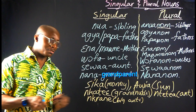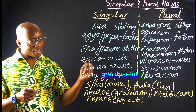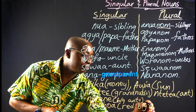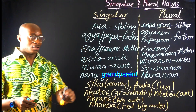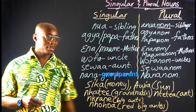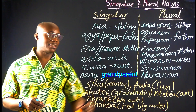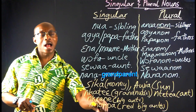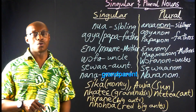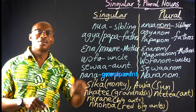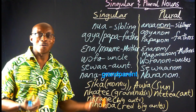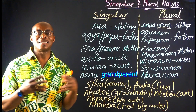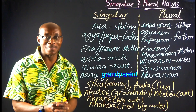Apart from this, we also have Nkohua — the big red ant. One, we say Nkohua; more than one, we say Nkohua. So plural and singular remain the same.